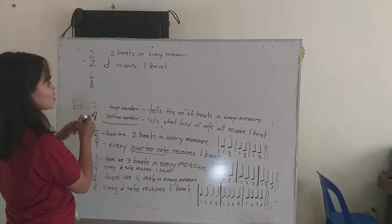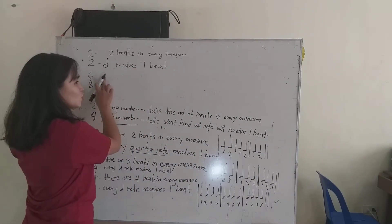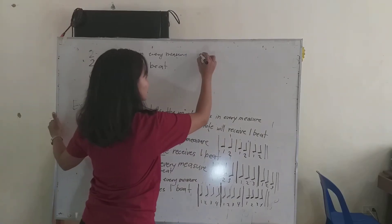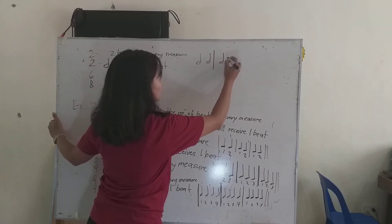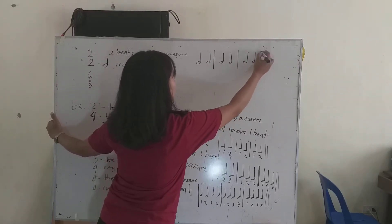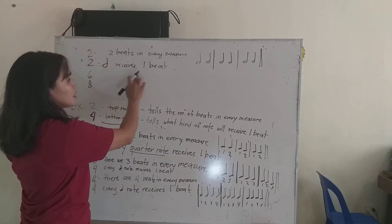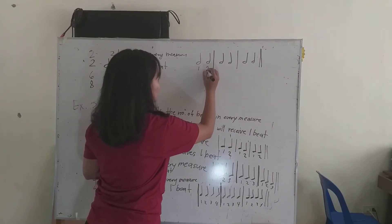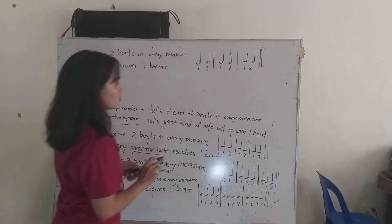Paano pag naging half note siya? Sa 2/2, ilang beat ang half note? 1-1-1-2. So magiging ang half note sa 2/2 ay 1 beat. So it becomes 1-2, 1-2, 1-2.